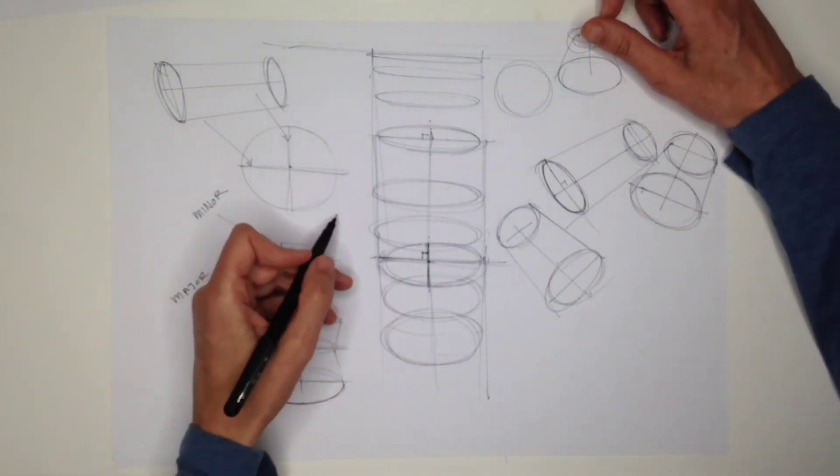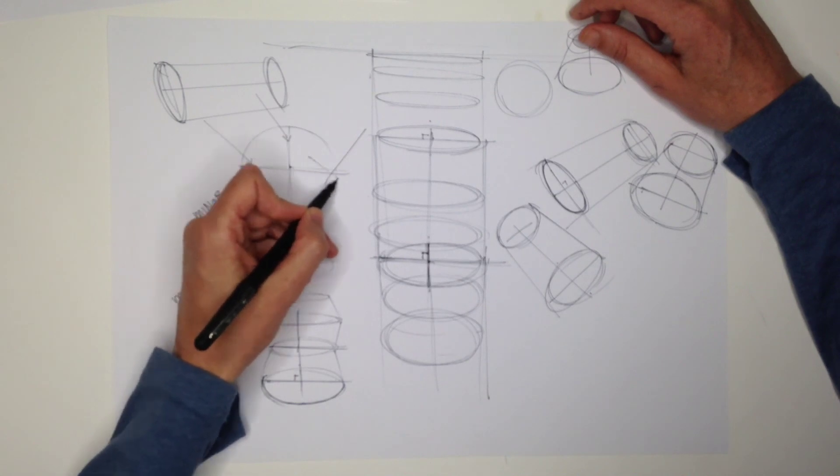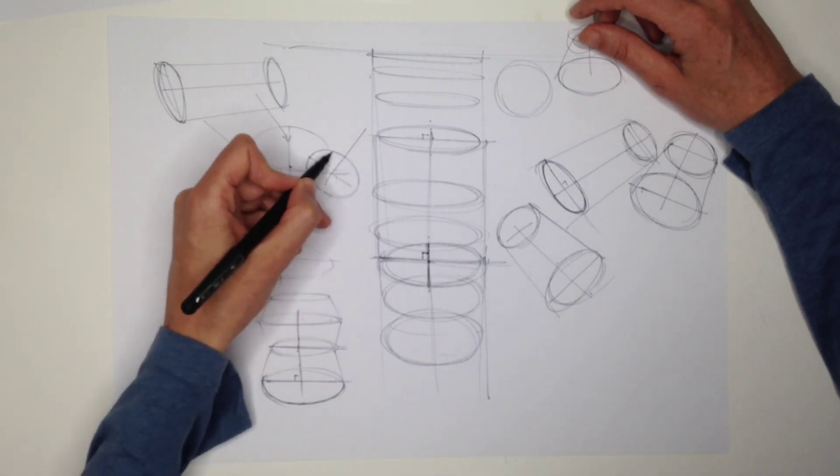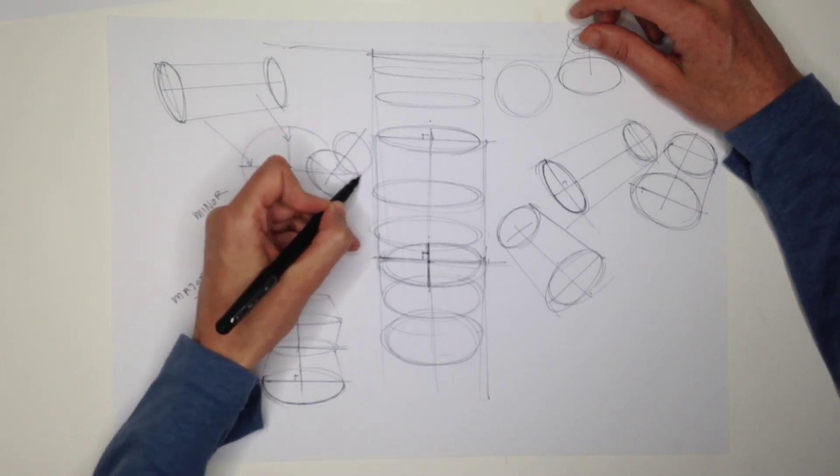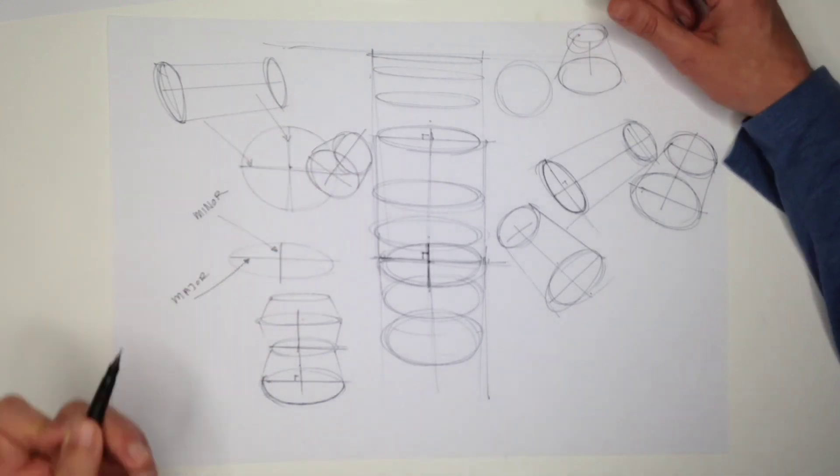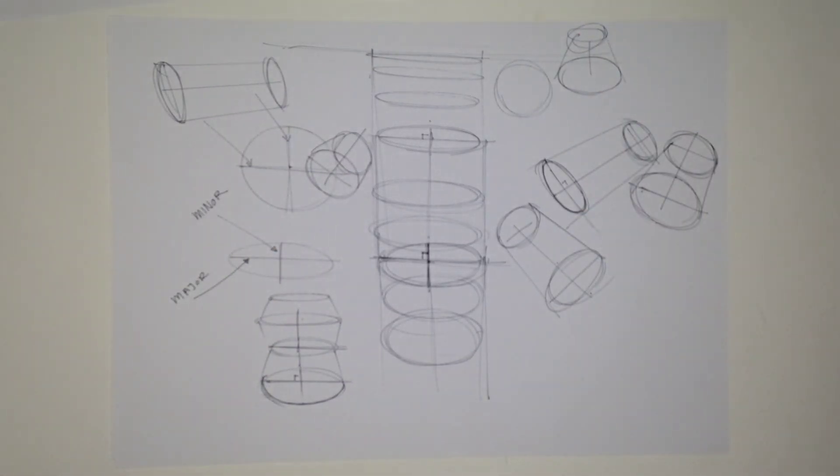Okay, so try just filling a few pages up with different kinds of standing and lying down cylinder shapes and check your perspective. Okay, we'll leave it at that and see how you go. Thank you.